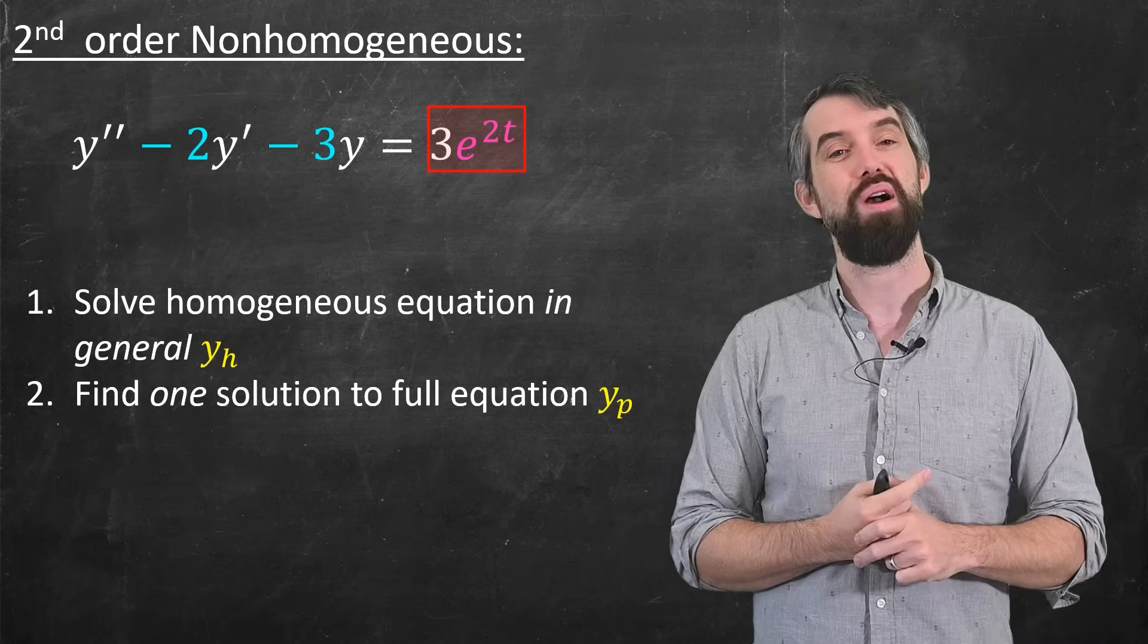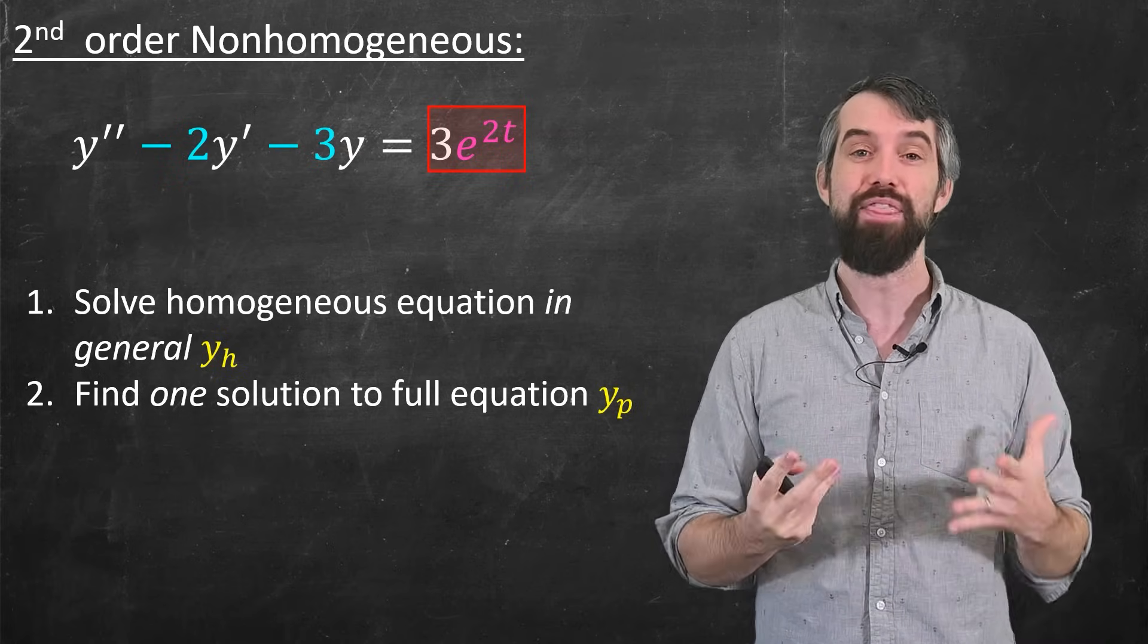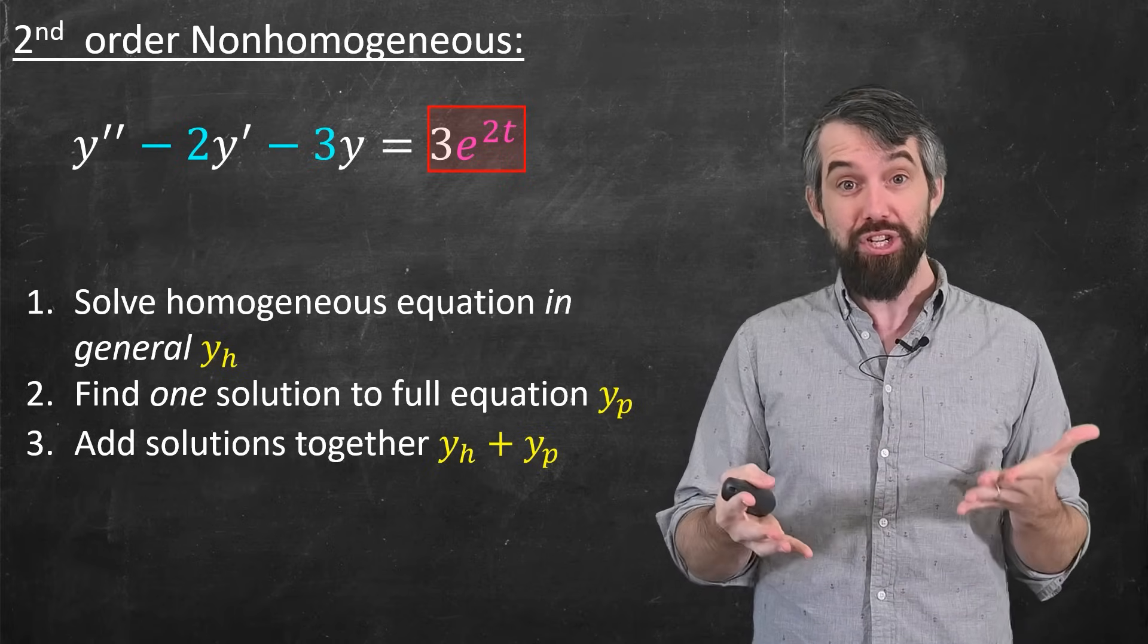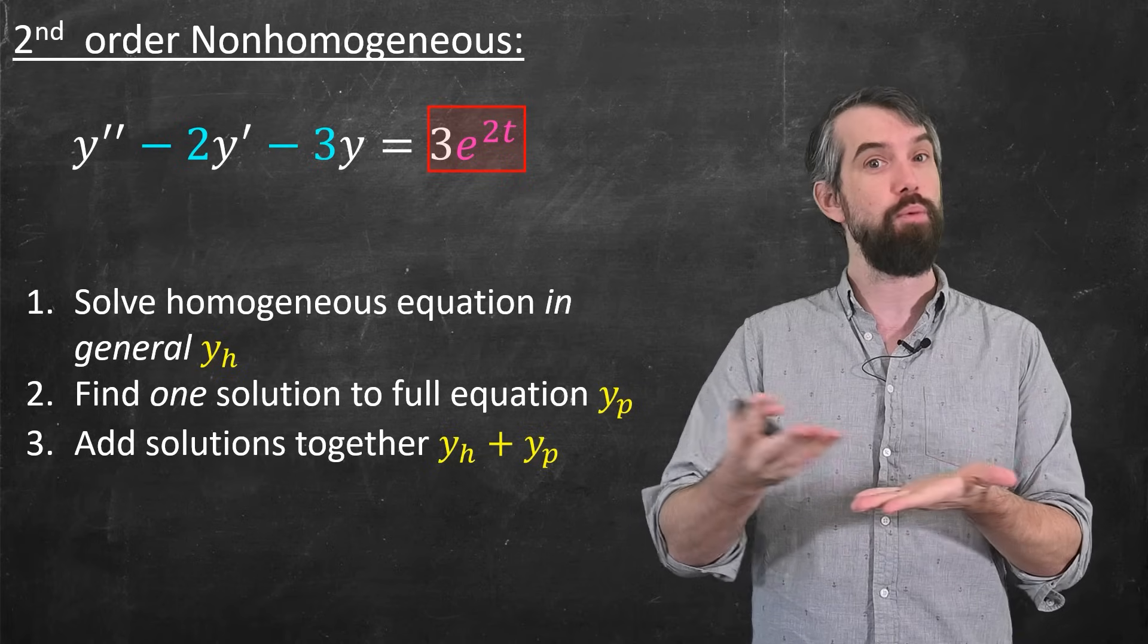So solve the homogeneous solution with constants in general, then find any old solution that you like to the full equation with the inhomogeneity still present. We call this often the particular solution, y sub p. And then the third step is just add those two together. So step one, we've already seen. The question now is about step two, and then we'll add the answers.